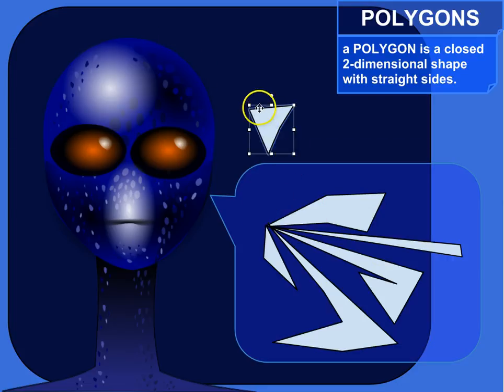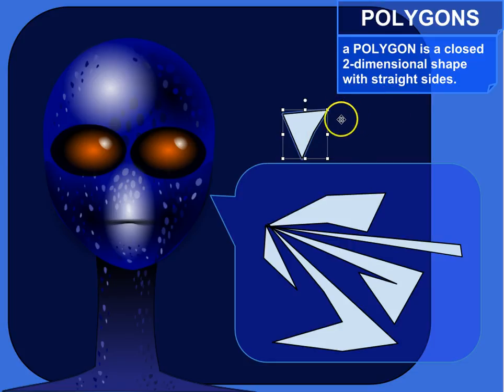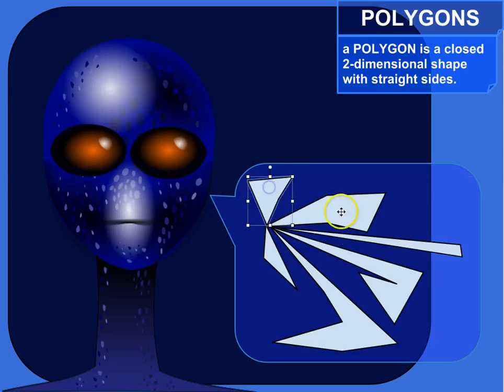So this guy is a polygon. It's two-dimensional. It's a flat shape. It's got straight sides, sides that are straight lines. And it's closed. It's got an inside. Alright, same is true for all these polygons. That's why I drew them there.